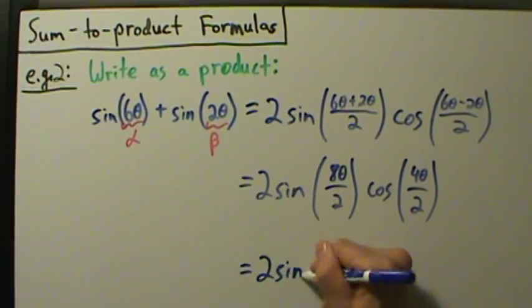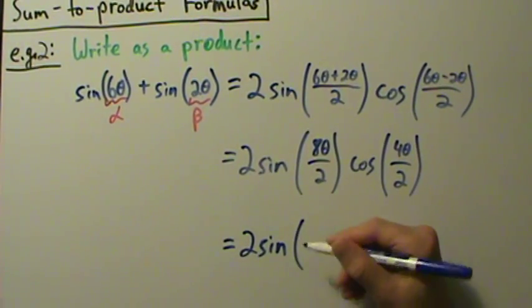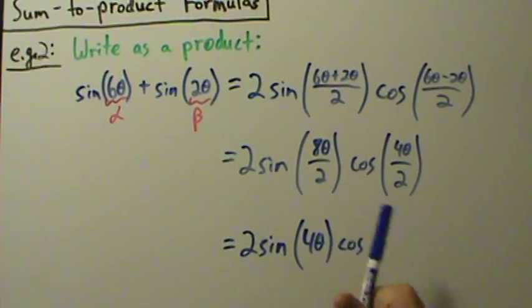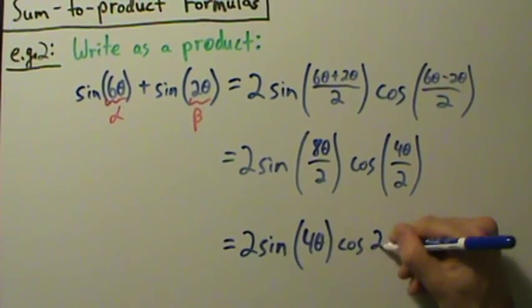So then one last thing left to simplify: that's two times the sine of eight theta over two is four theta. Then we have the cosine of four theta over two, which is just two theta.